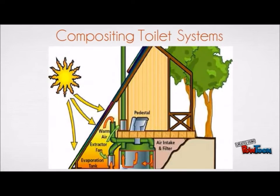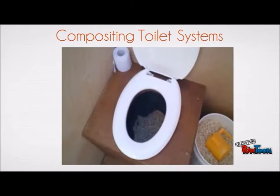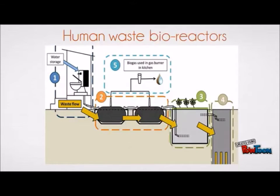Composting toilet systems involve the collection and treatment of black water. They do not require water to flush human waste but require the addition of sufficient carbon-based packing materials such as sawdust after using the toilet. Effluent can be reused to fertilize crops. Human waste bioreactors involve the anaerobic treatment of organic biosolids. Effluent can be reused to fertilize crops, and it generates methane gas — known as biogas — which could be used for cooking and heating.